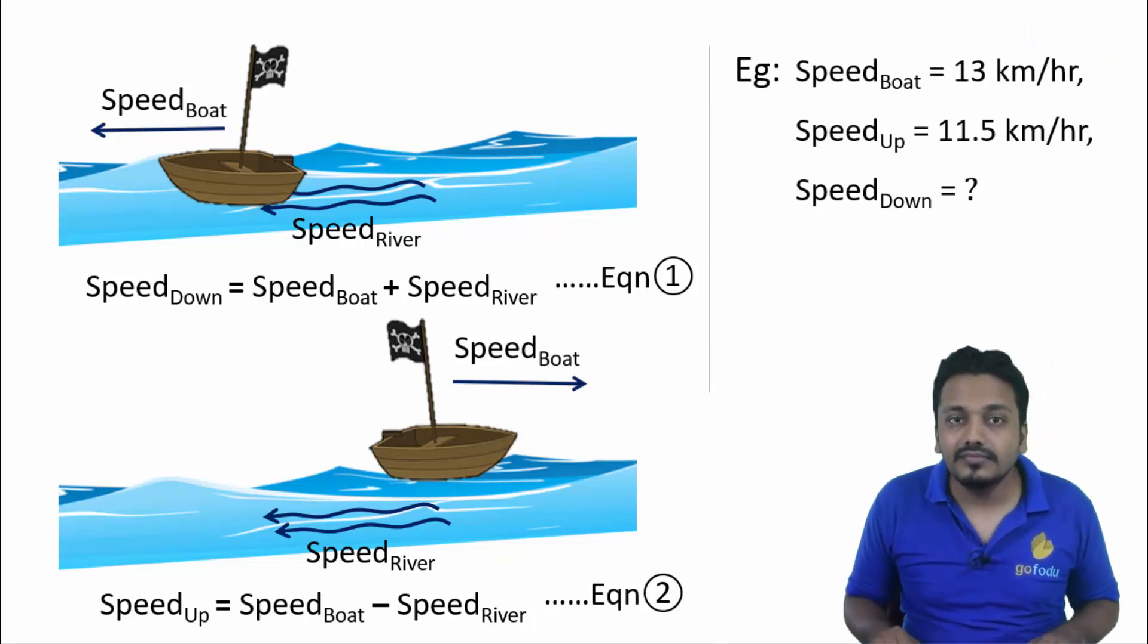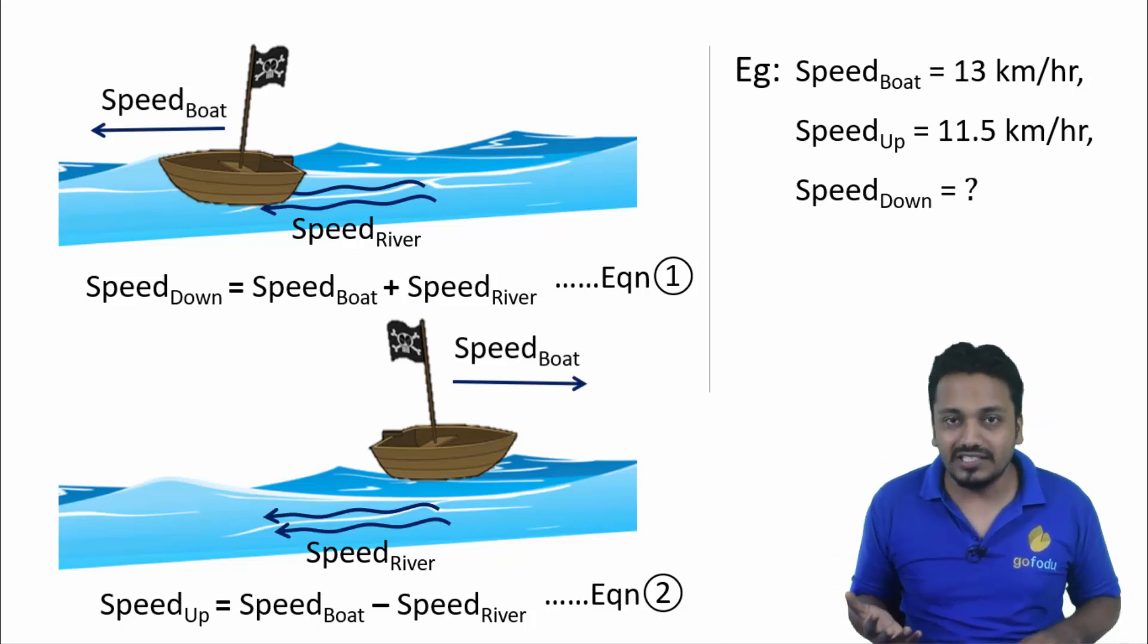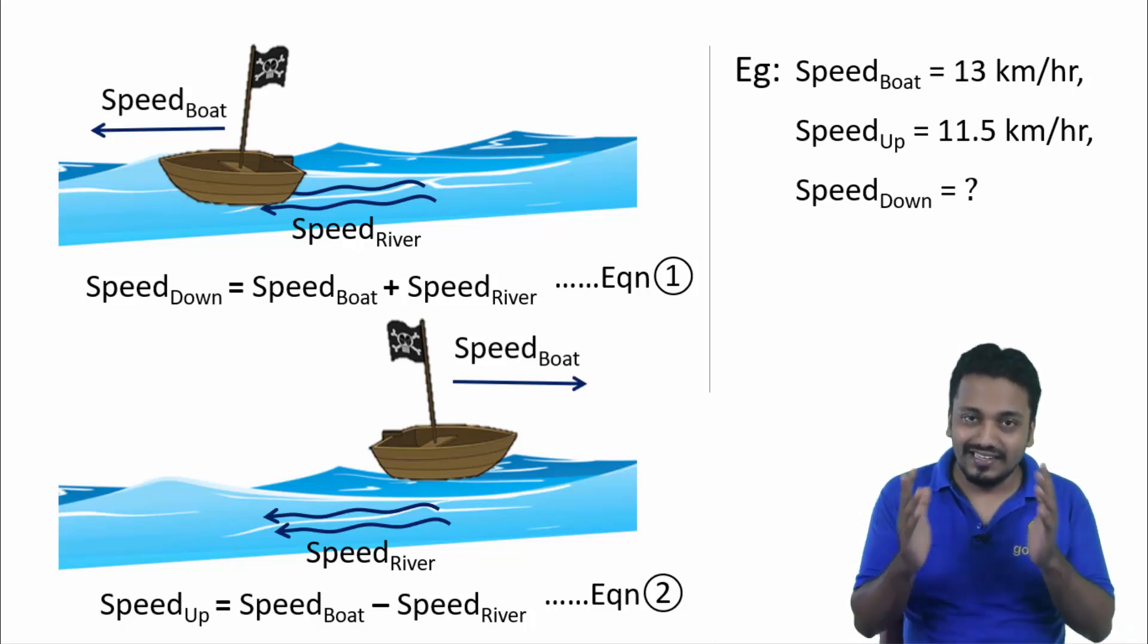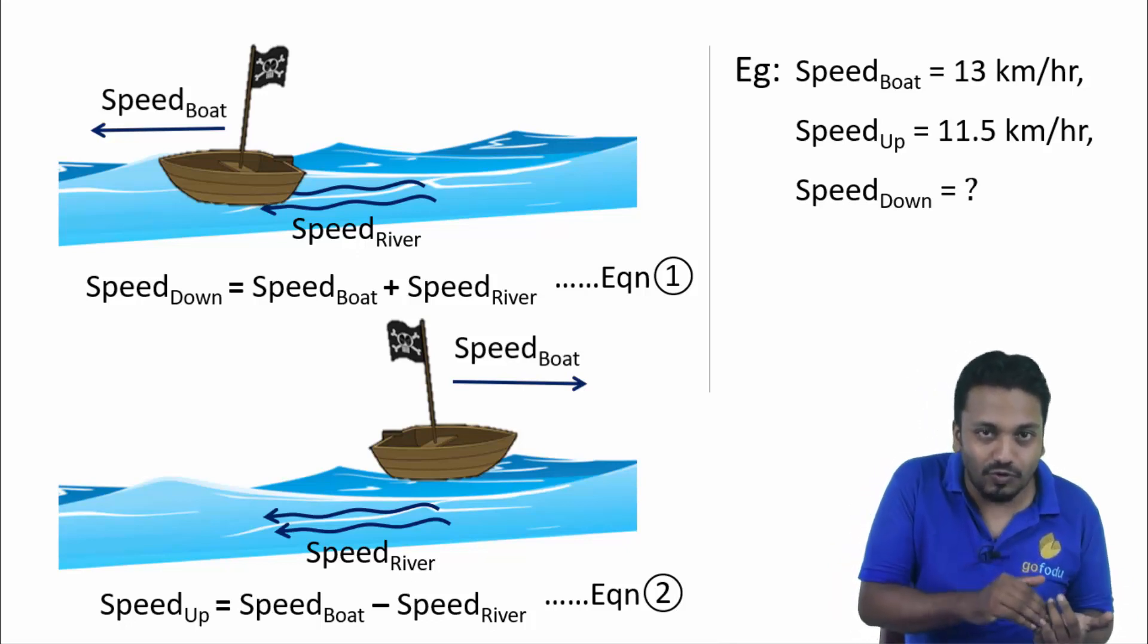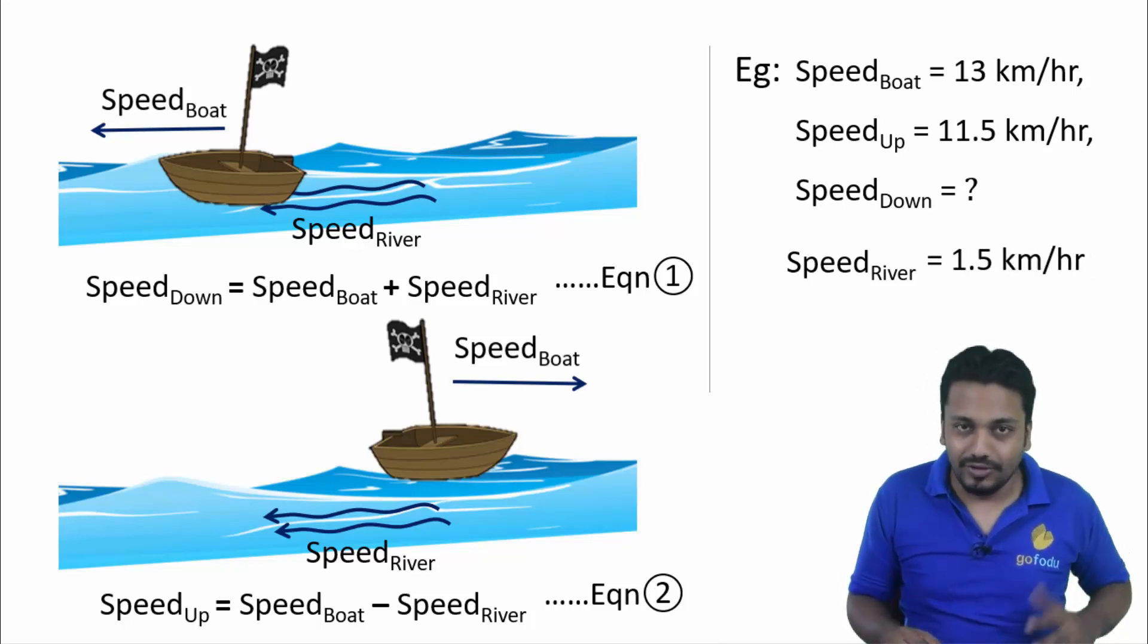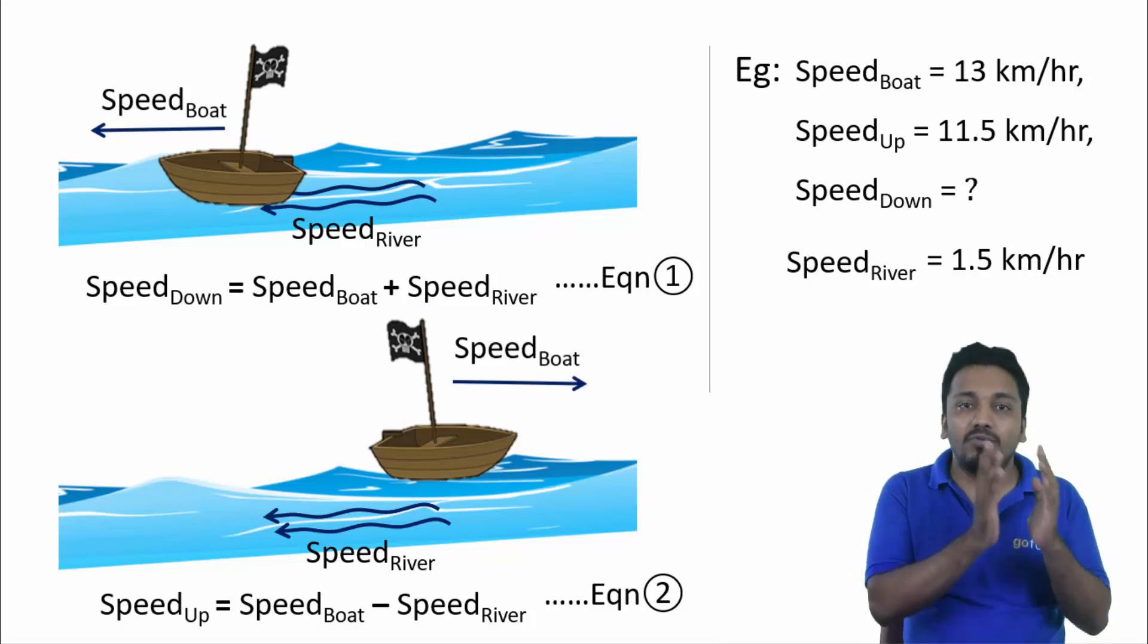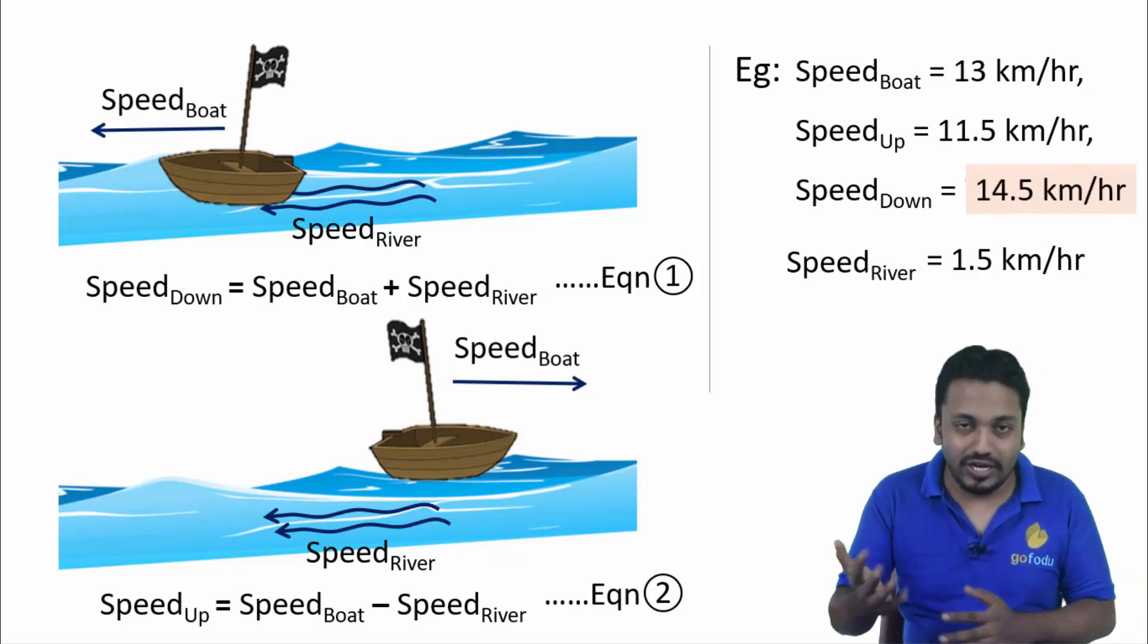Speed of boat is given as 13 km per hour and speed upstream is 11.5 km per hour, what will be the speed downstream? Speed upstream is less than boat's actual speed because opposite flow will be countering it. River speed will be 13 minus 11.5, that is 1.5 km per hour. For speed downstream we add boat's speed to river speed, 13 plus 1.5, 14.5 km per hour.